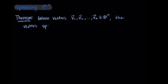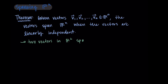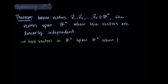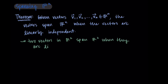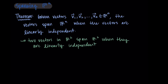So back to the theorem: these vectors would span Rn when the vectors are linearly independent. Let's unpack this. From this theorem, we could say that two vectors in R2 will span R2 when they are linearly independent. As a reminder, what this means is that these two vectors, if they're linearly independent, would allow us to reach any point in R2.